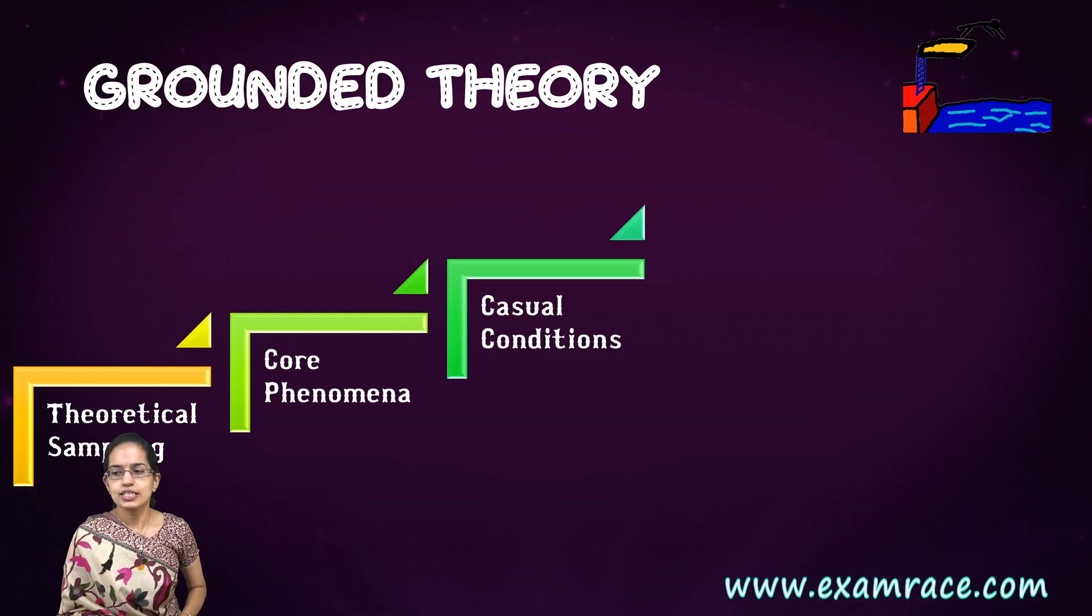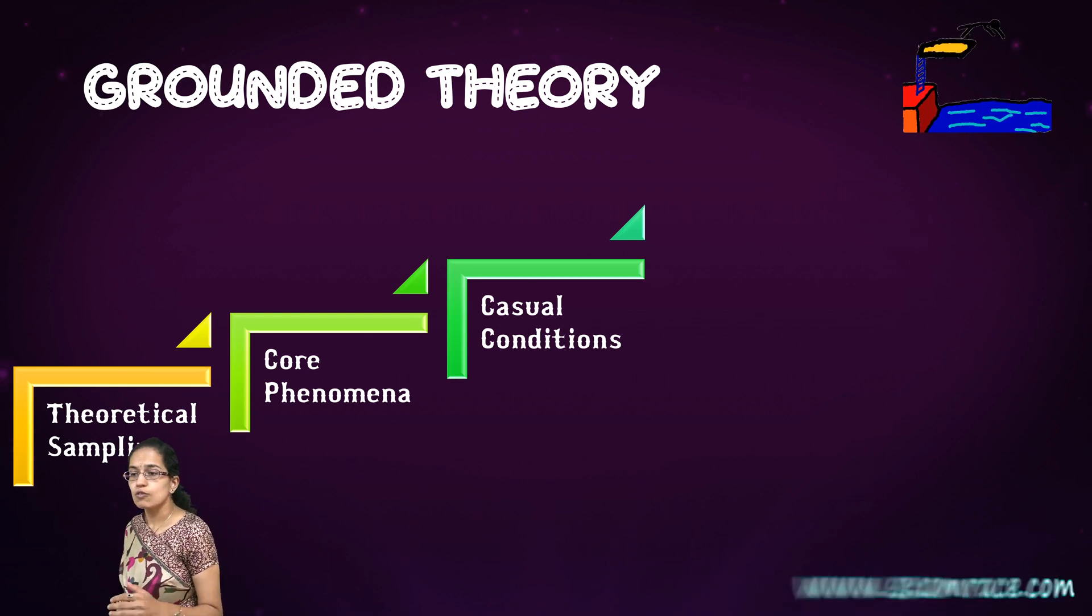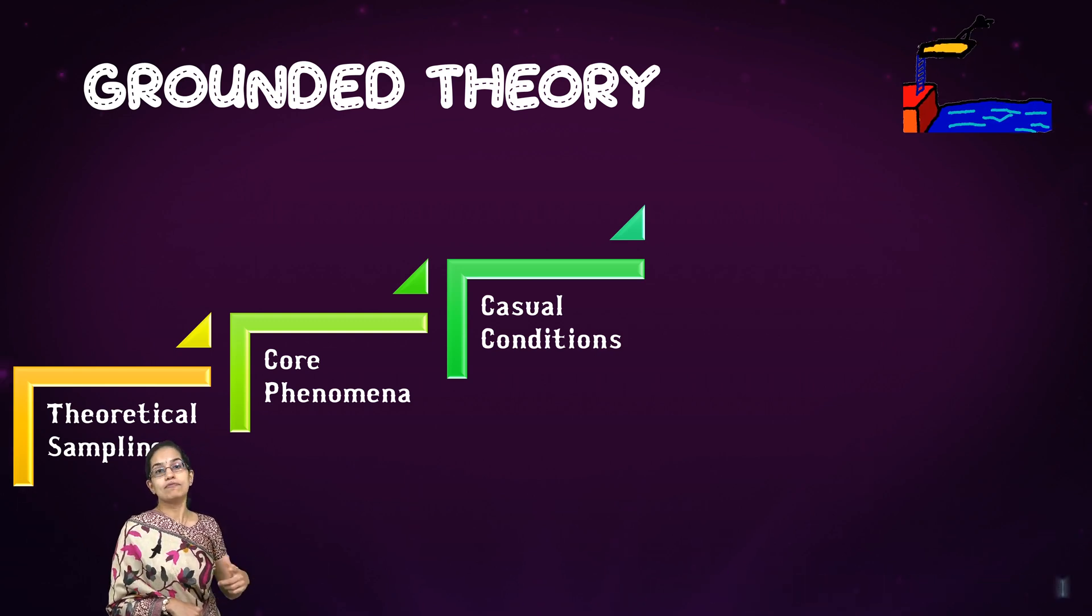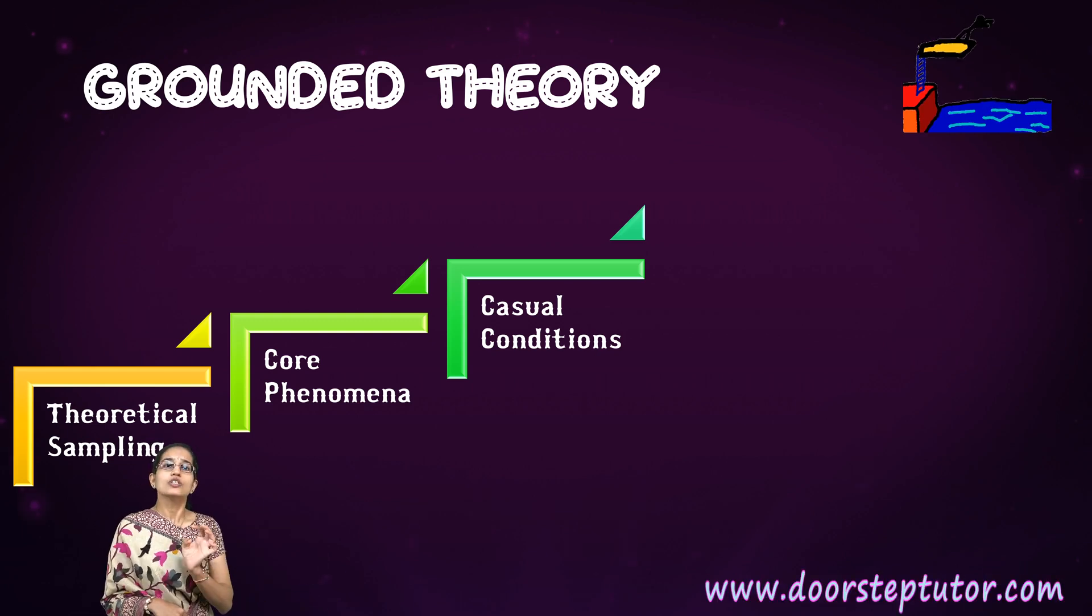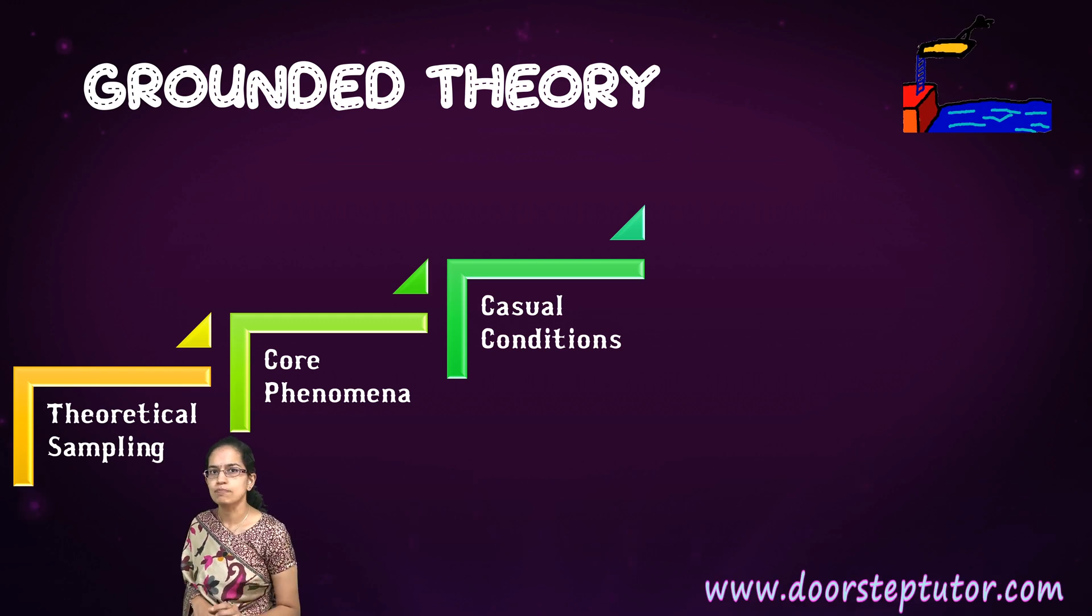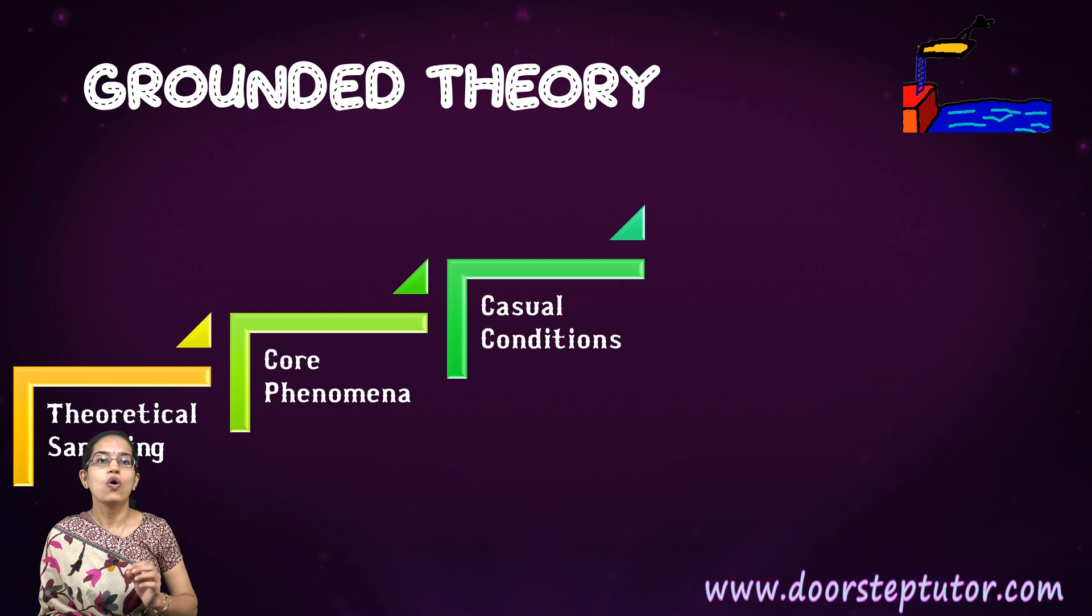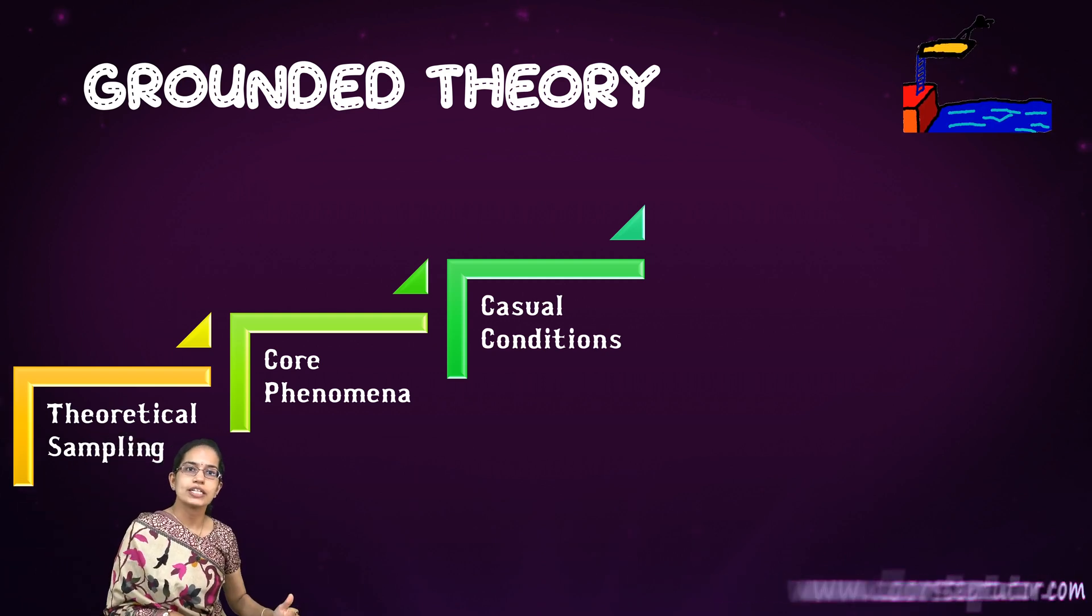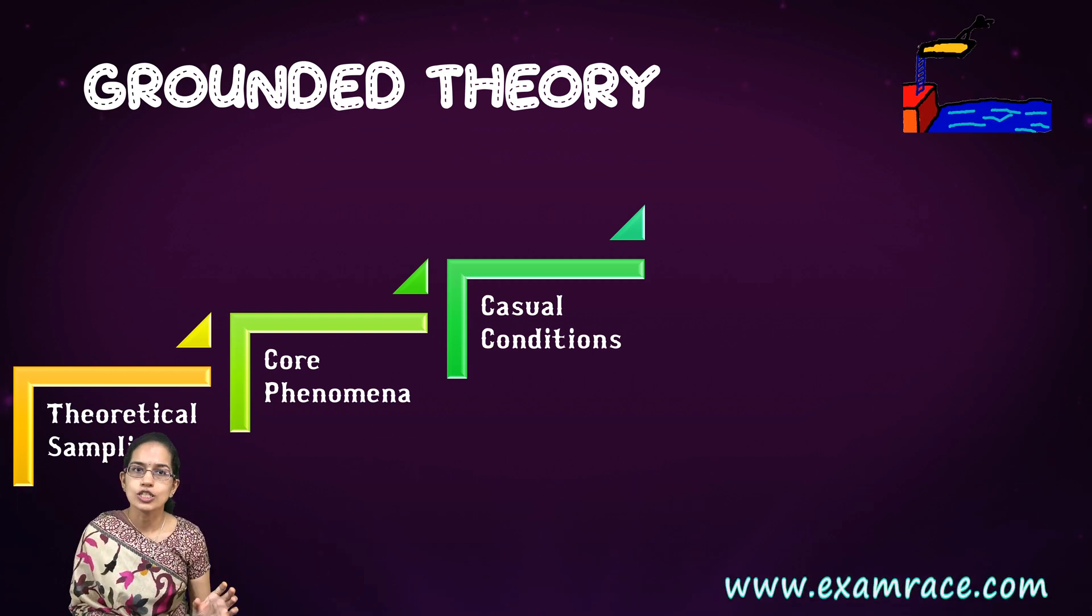The next important step is the causal connections. That means what influenced this process? What was the factor behind you being a topper? What influenced the process is the causal condition. This could be someone in your family, a senior who guided you. From different respondents you would have different answers, and that is a causal condition.